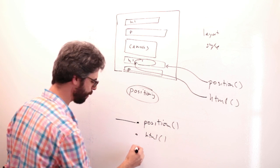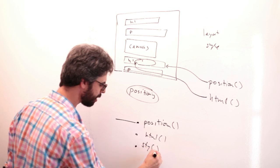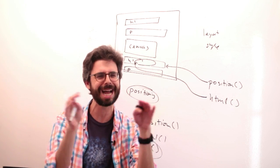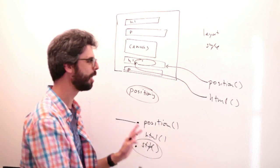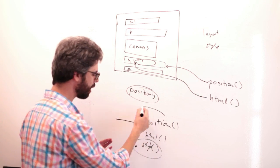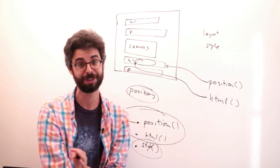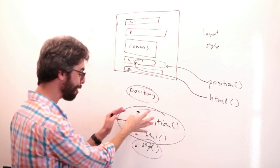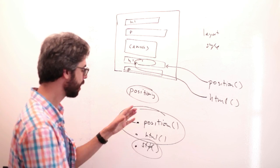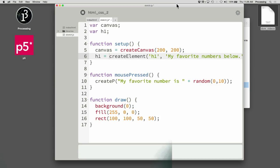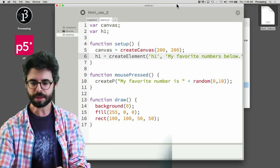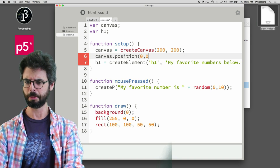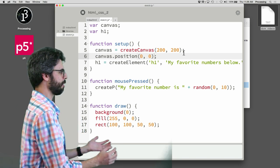Probably something.style is the function you'll ultimately want to use the most, but style and CSS is a bigger topic — we'll get to that later. So let's start with position. Here I'm going to say canvas.position, and let's just say 0, 0 and see what happens — like where is 0, 0 on the page?